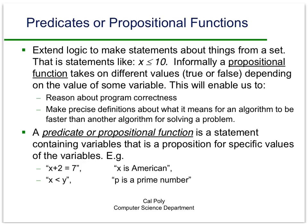A predicate or propositional function is a statement that contains variables, and it becomes a proposition for specific values of those variables. For example, the propositional function x plus 2 equals 7 is not a proposition on its own — it has no truth value. But if we assign x the value 5, it becomes true, and if we assign x the value 6, it becomes false.